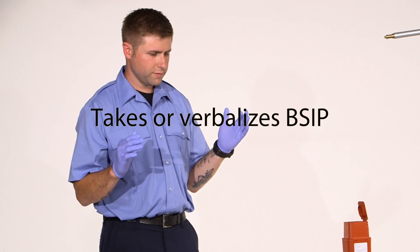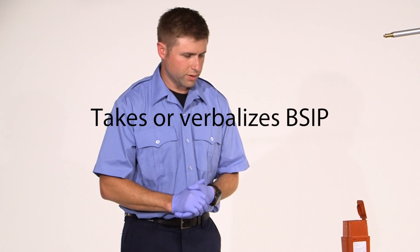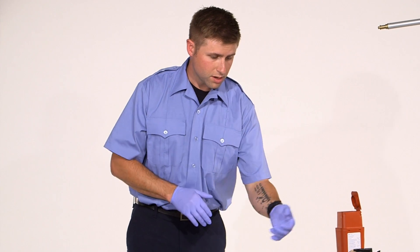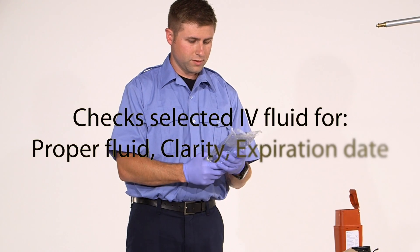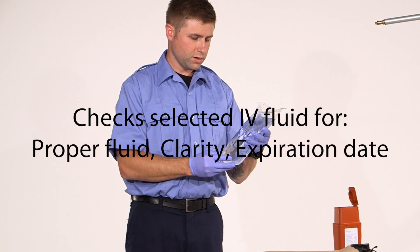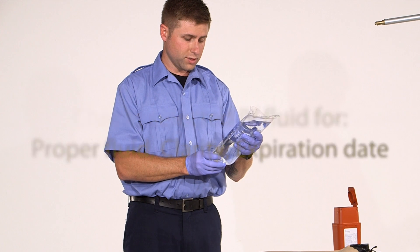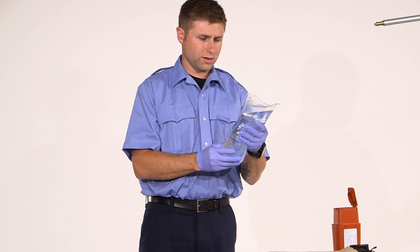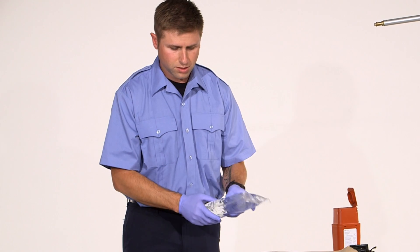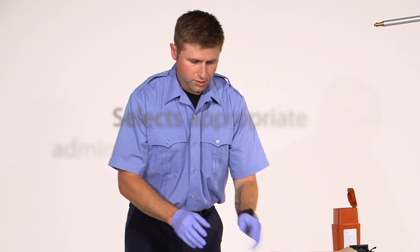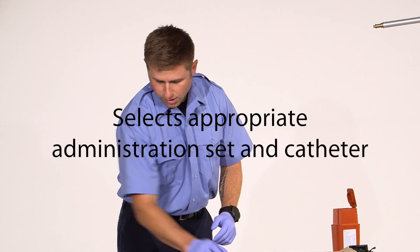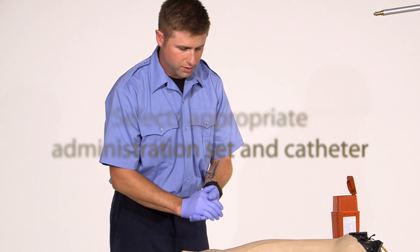BSI. My scene is safe. All right, I am going to place a catheter into this arm and check my fluid. First, I'm going to make sure I have the right fluid, that my expiration and my fluid's not expired, and the clarity of the fluid. Make sure it's nice and clear. I'm also going to make sure I've got my drip set and the correct catheter and all the supplies that I need.